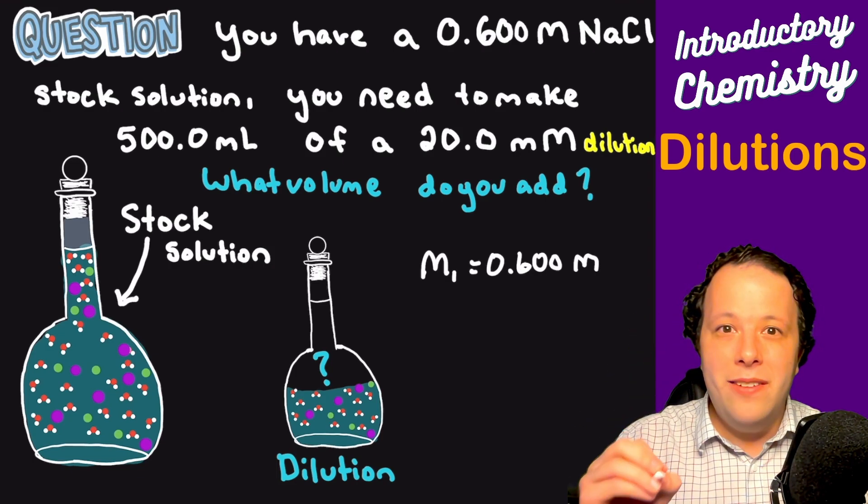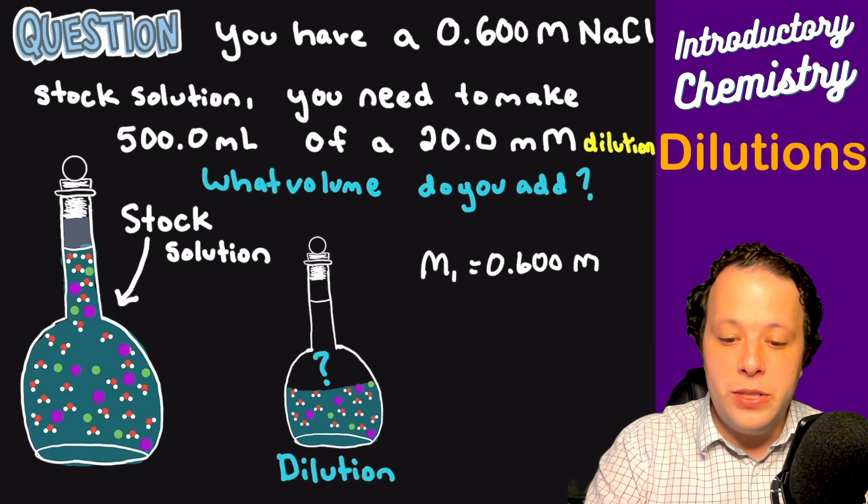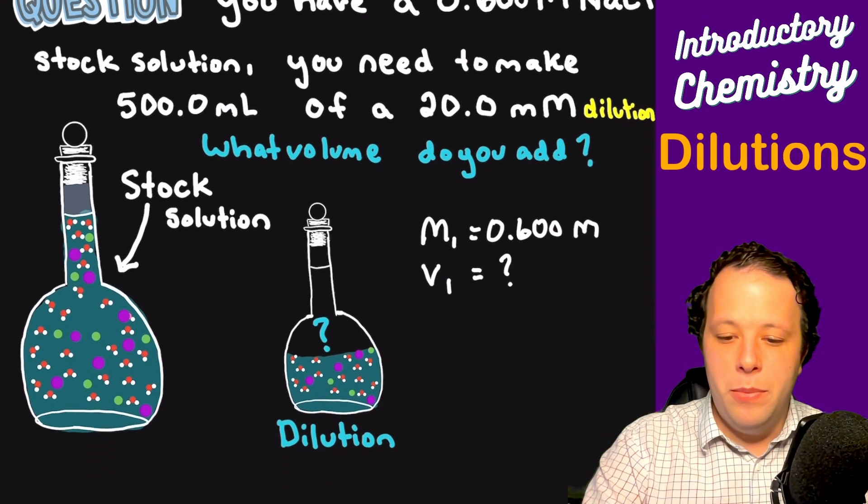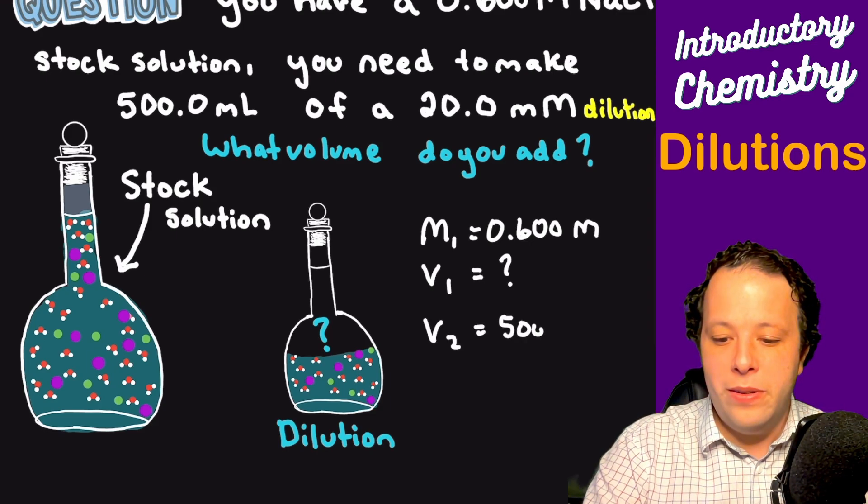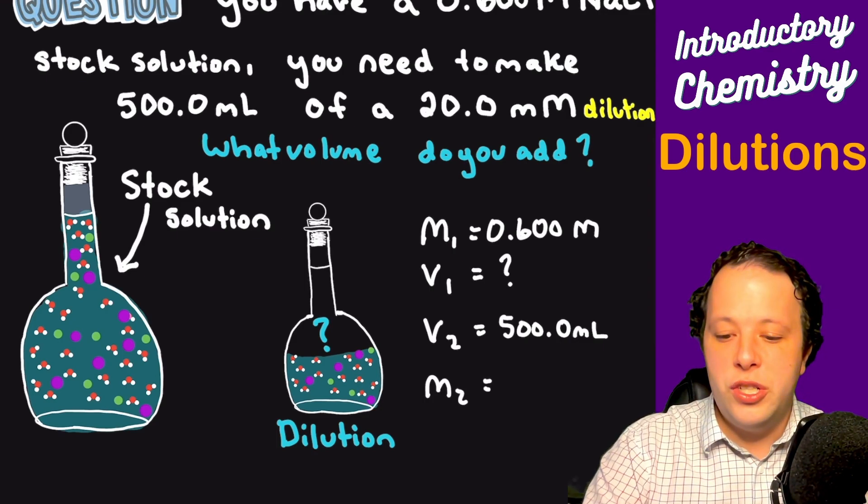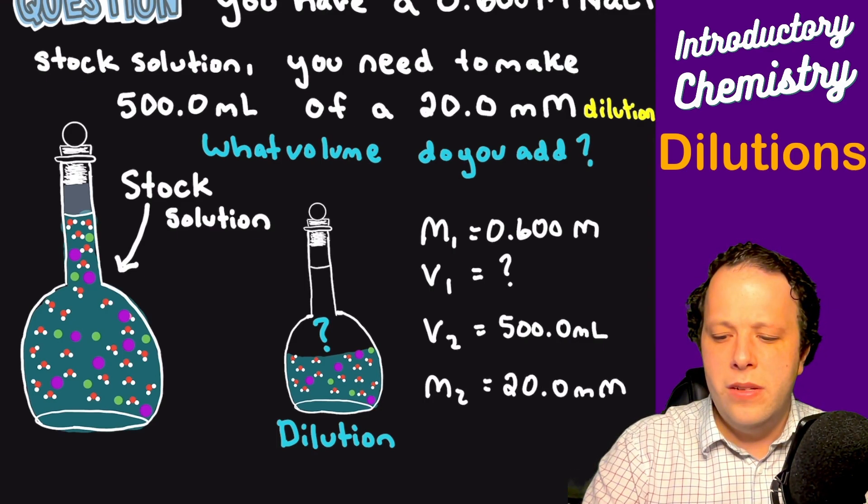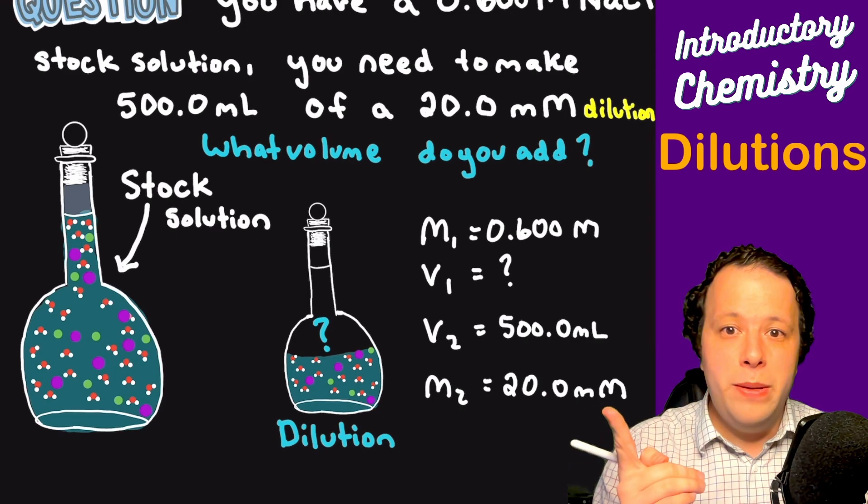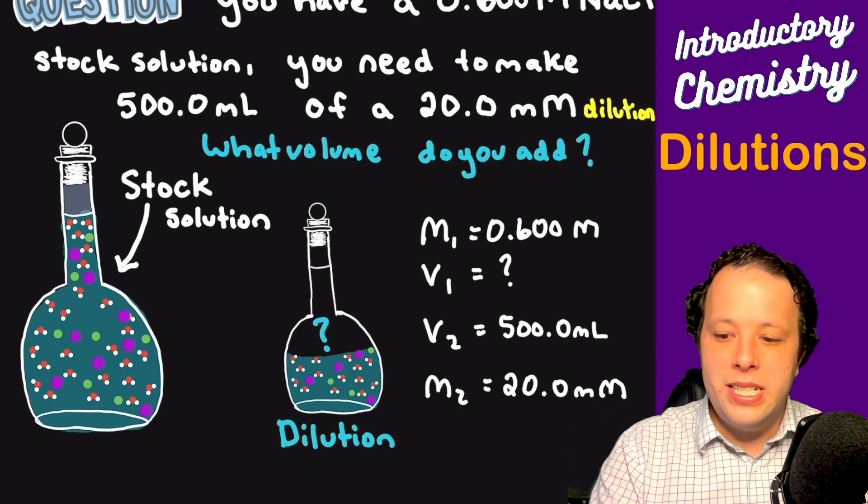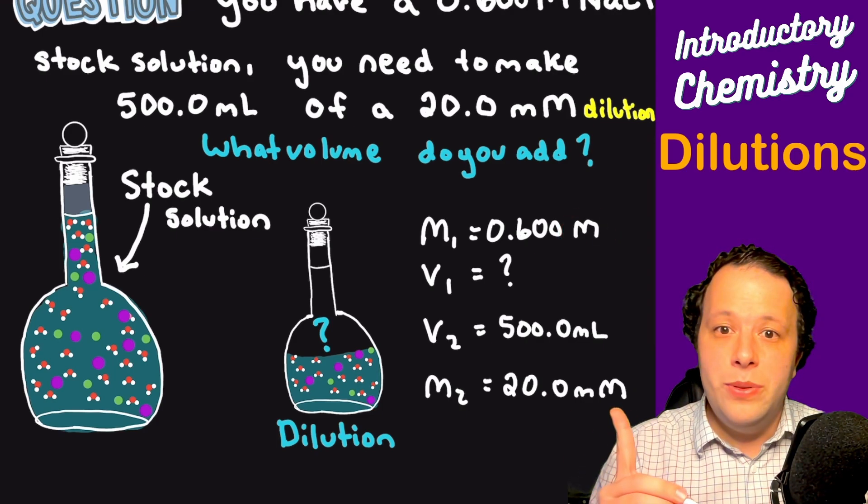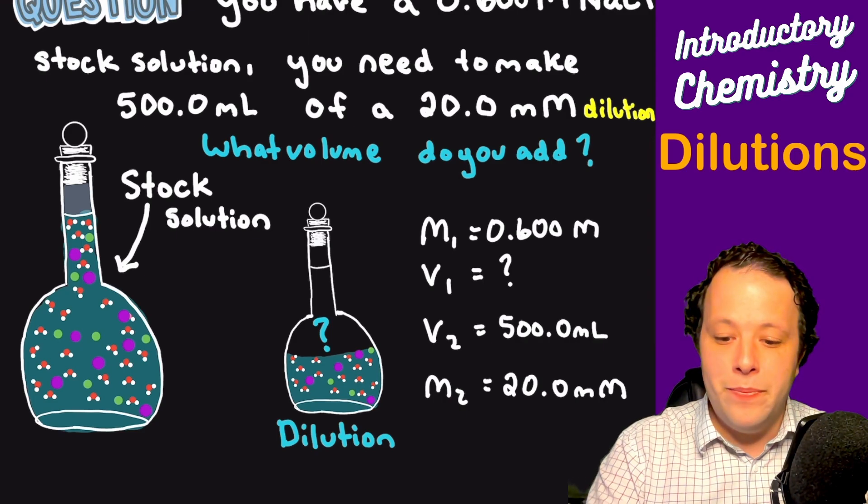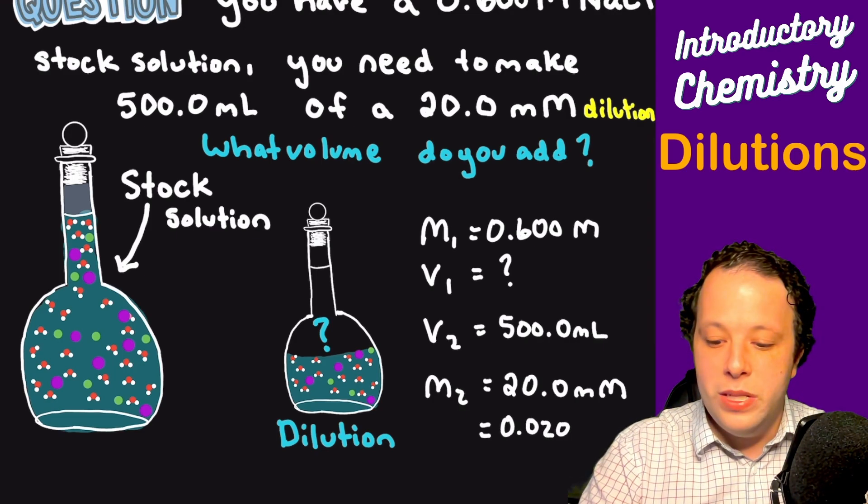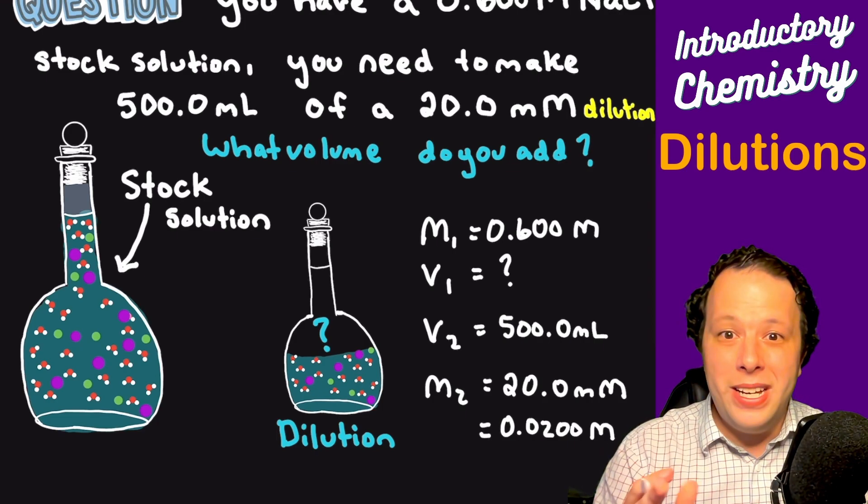You need to make 500 milliliters of a 20 millimolar solution. We don't know what volume one is because it's asking us what we're adding. But we do know V2 which is 500 mL, and we know M2 which is 20 millimolar. Notice how the units don't quite match. We have 20 millimolar here and 0.600 molar up here. So we need to convert this to molar. We'll divide this number by a thousand to get 0.0200 molarity. Now we can plug all this into our formula.